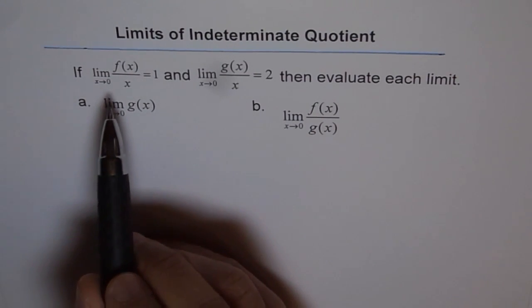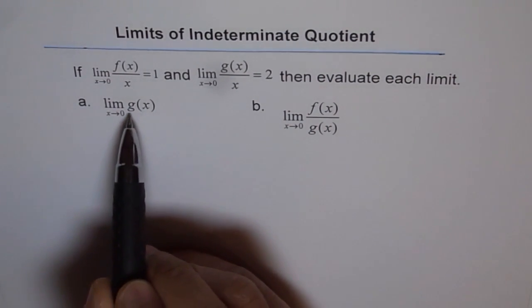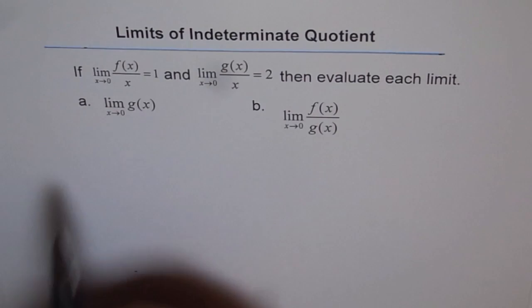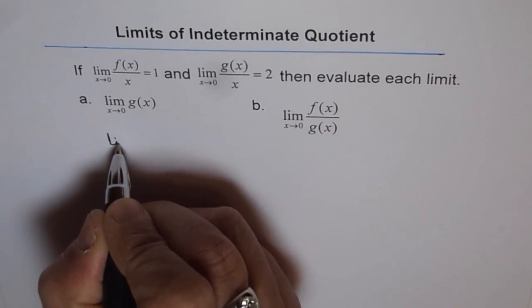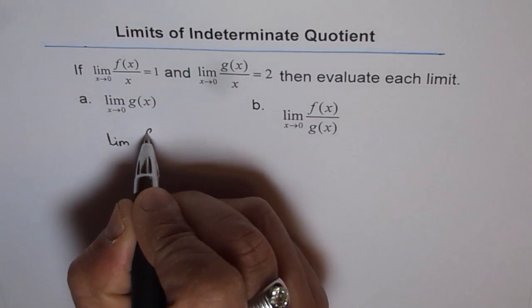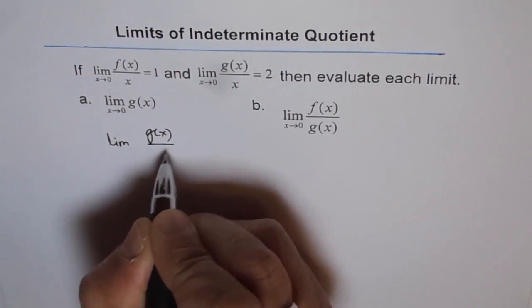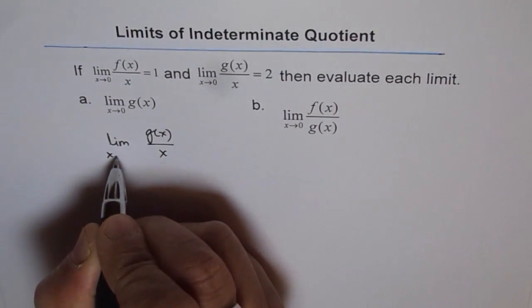Let us consider the function. We need g of x when x approaches 0. So, let us consider the function limit of g of x over x as x approaches 0.